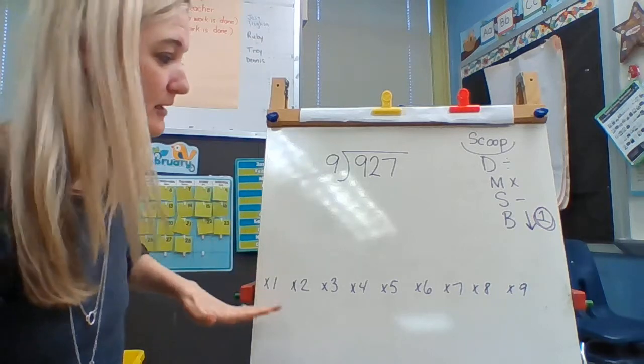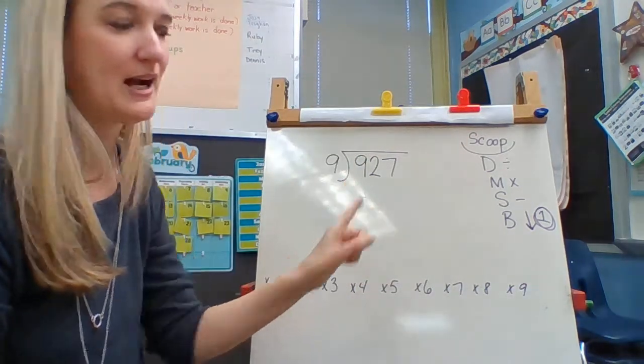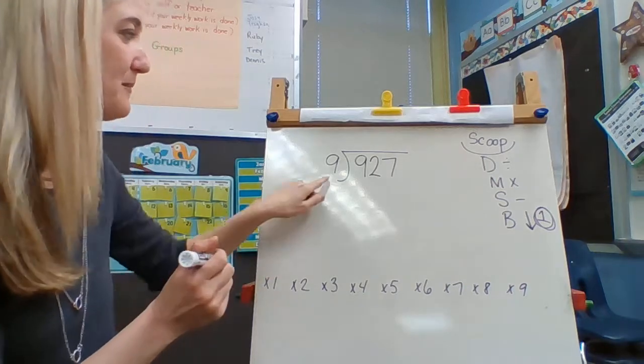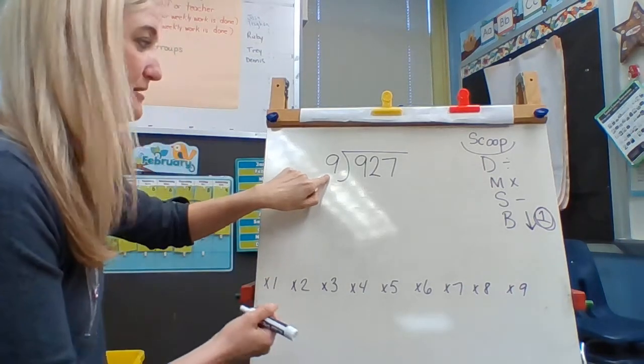So I'm going to do a little bit of work up front and it's going to help me get through this entire problem. So down here I'm going to skip count by my divisor, which is 9.